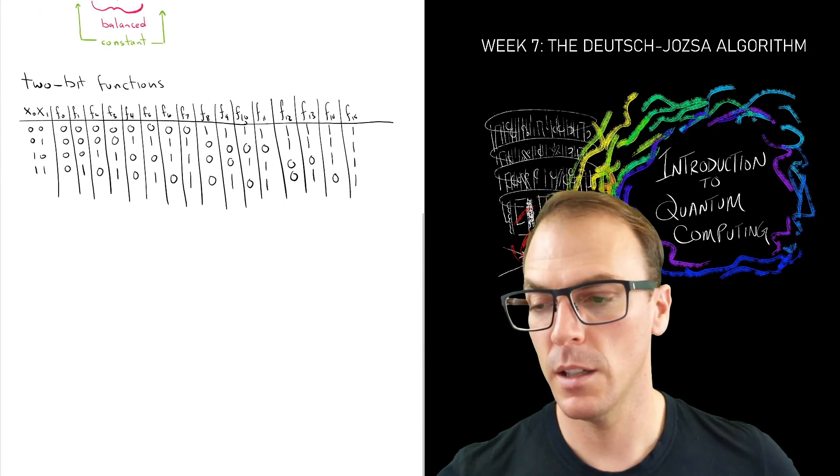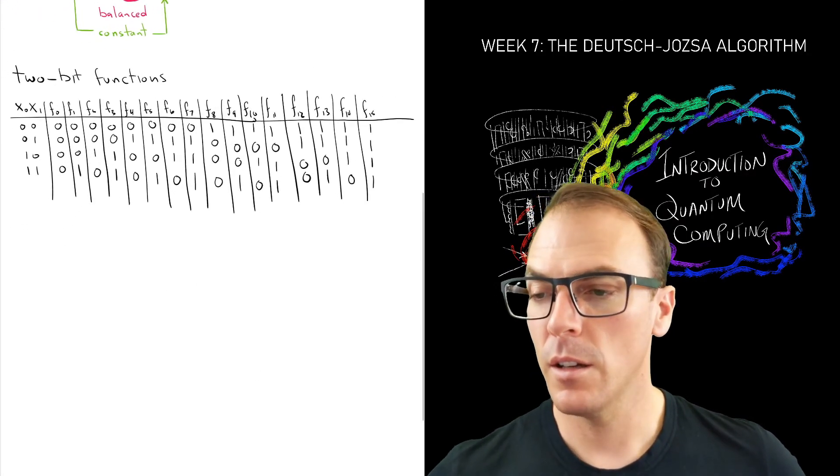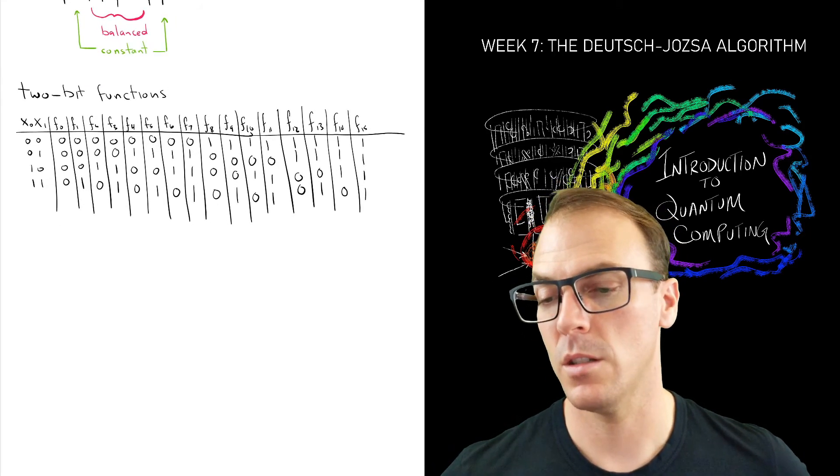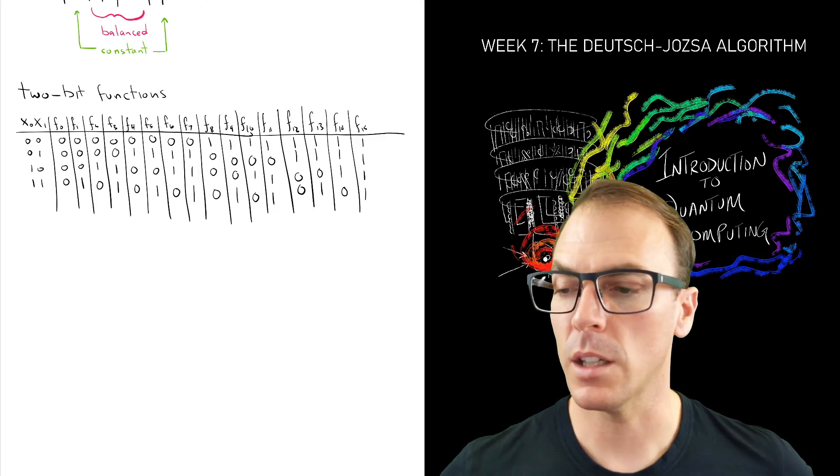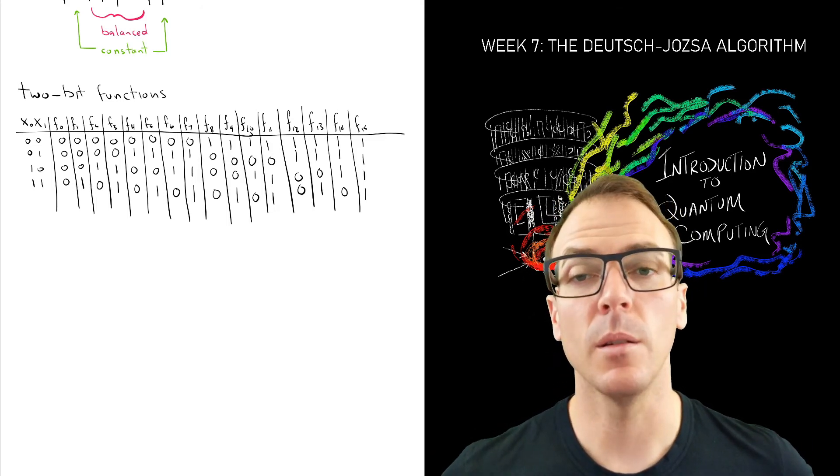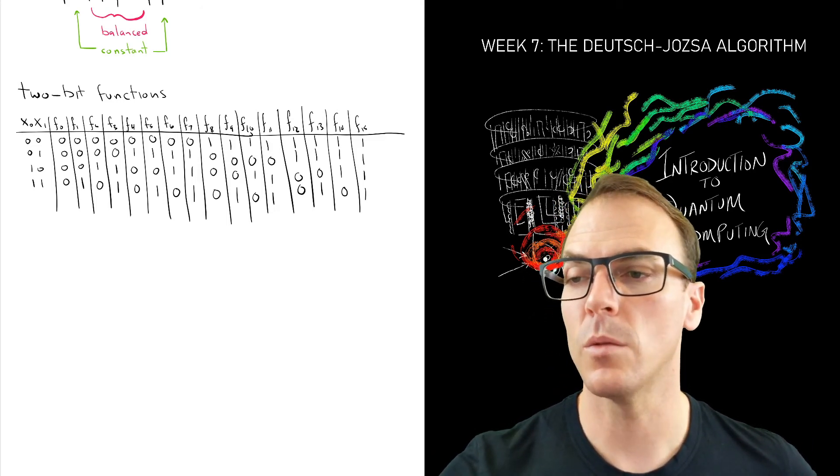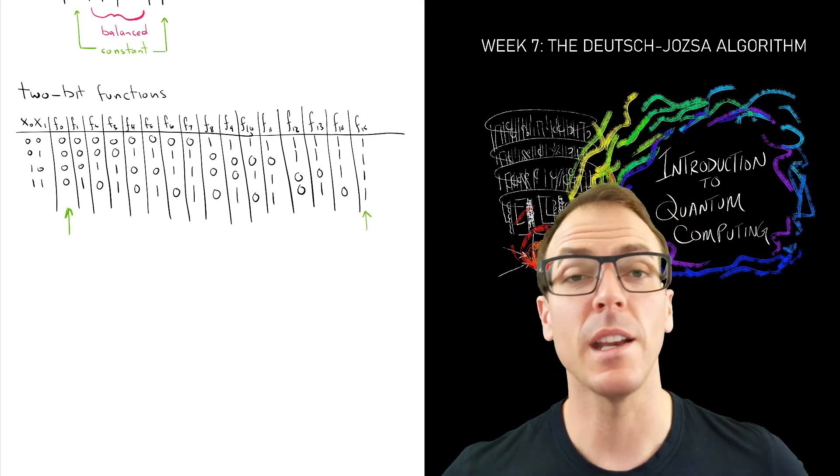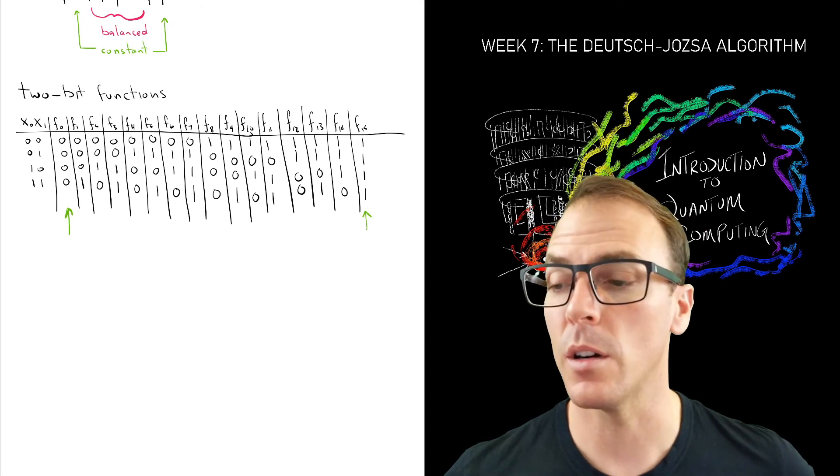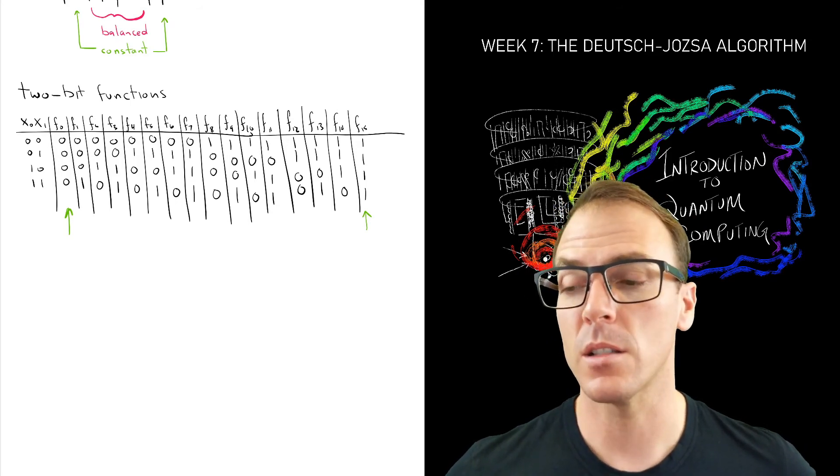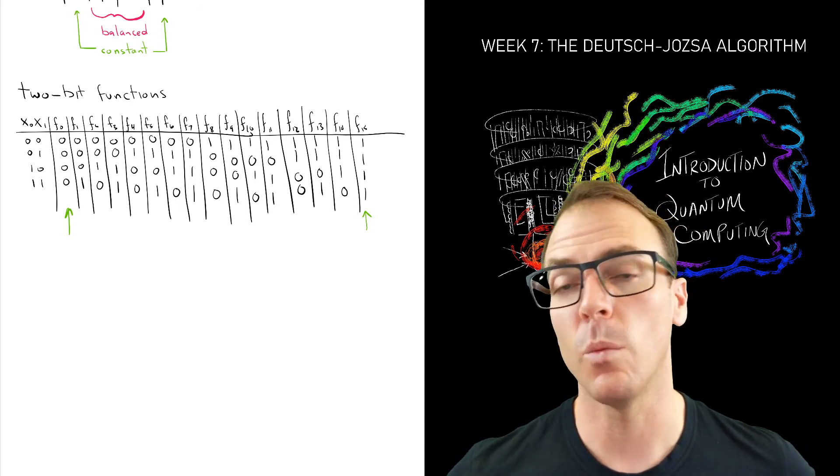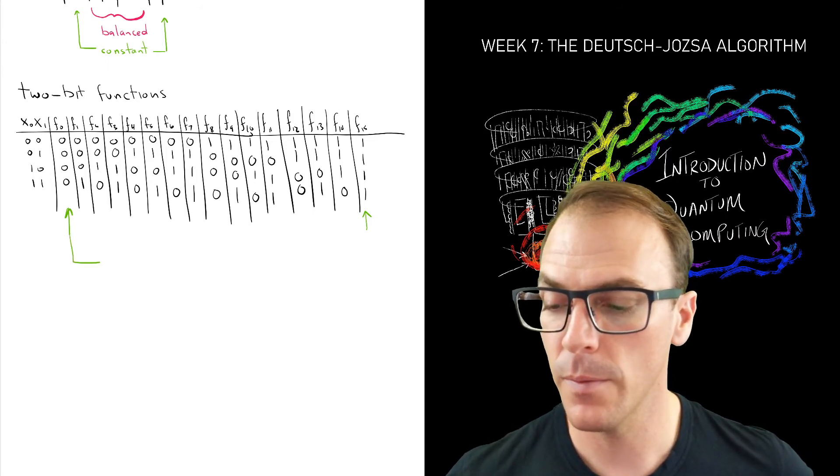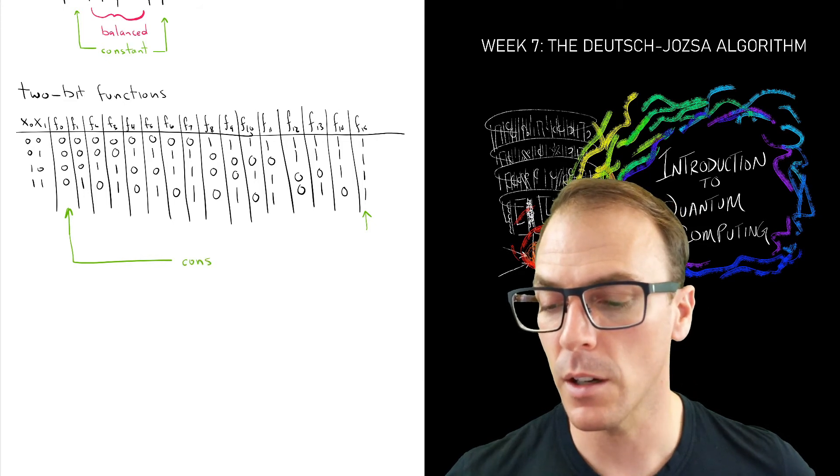And let's have a look here. Let's look for the constant functions are easy. So we can identify those. Constant, constant. You can imagine as we increase the number of input bits, the constant functions are the ones that have all zero or all one. So there's always two constant functions. So these are the constant functions.